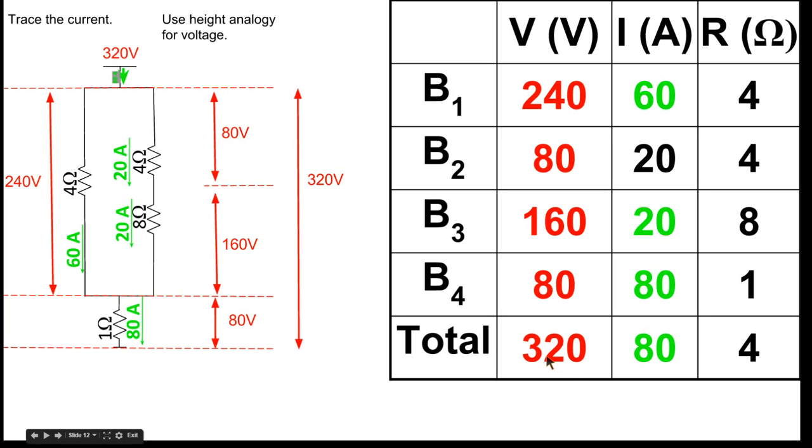I can take the total voltage drop 320 divided by my equivalent resistance to find what we call our circuit current. Now the circuit current is important because it's the current coming out of the battery and going into the battery.